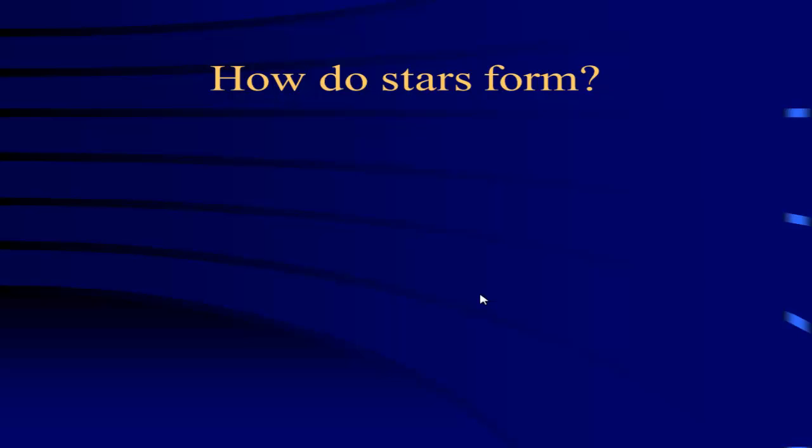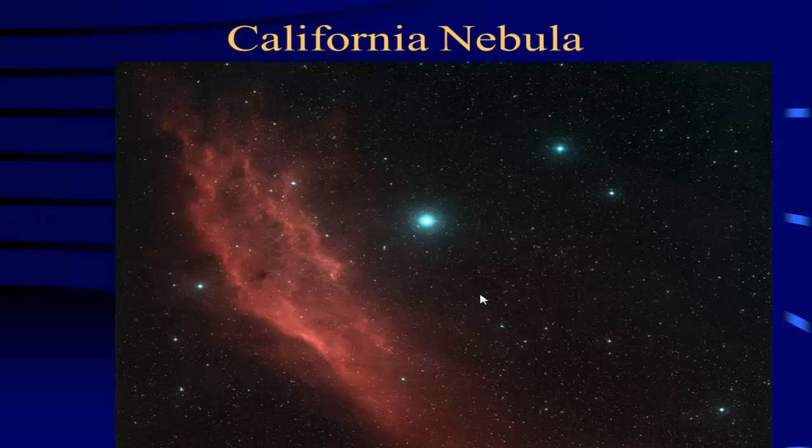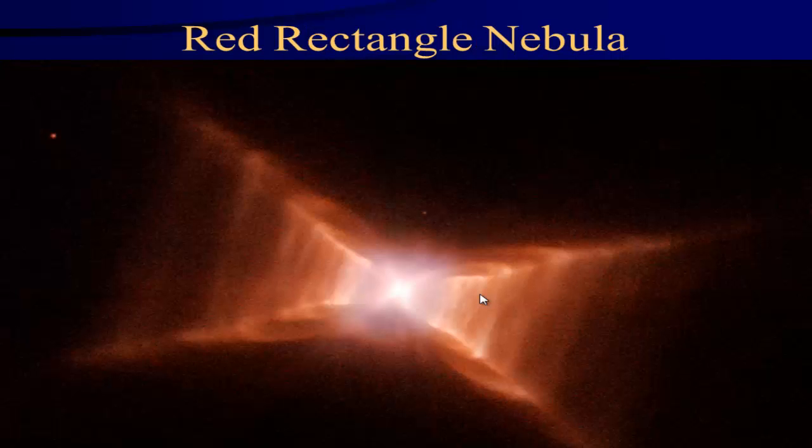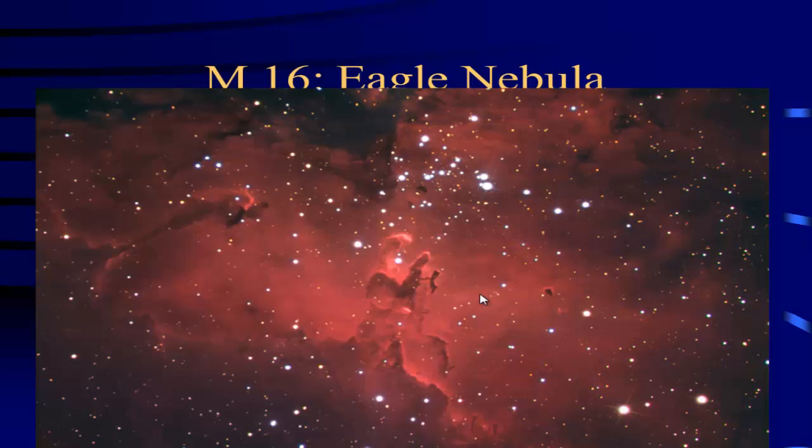Or how solar systems form, which is pretty much the same thing. They first started out as a nebula. We call them molecular clouds - large clouds of gas and dust, mostly hydrogen and helium. We have the California Nebula, the Red Rectangular Nebula, the Witch Head Nebula.